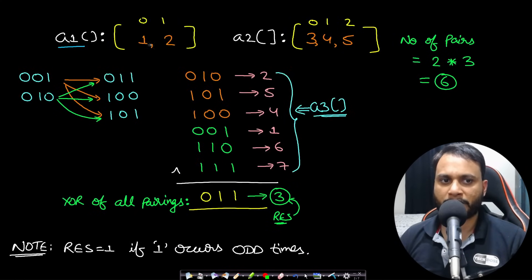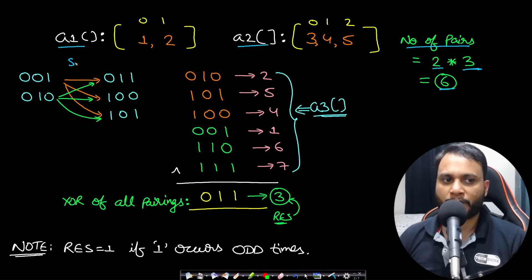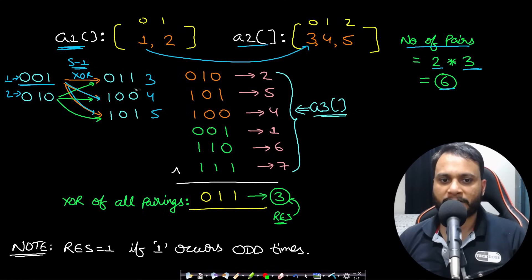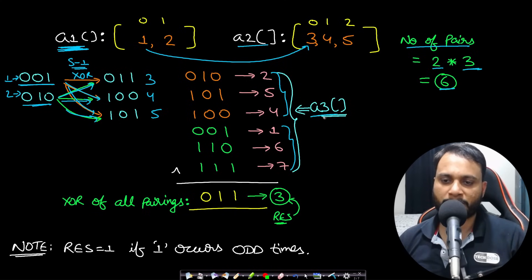Let's look at an example. Say array1 is [1, 2] and array2 is [3, 4, 5]. The number of pairs we can form is 2 × 3 = 6. Step 1 is to take each element of array1 and XOR it with every element of array2. Pairing 1 with 3, 4, 5 gives XOR values 2, 5, 4. Pairing 2 with 3, 4, 5 gives 1, 6, 7.